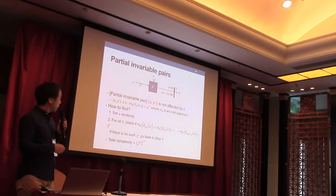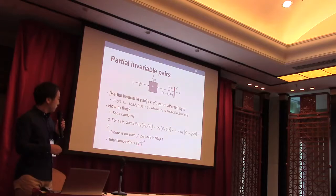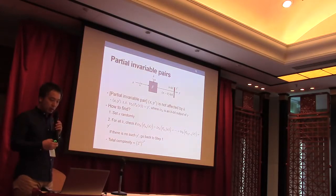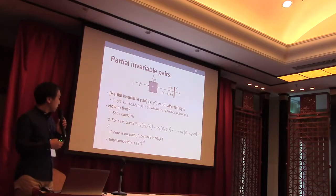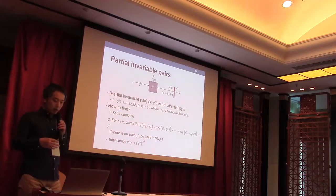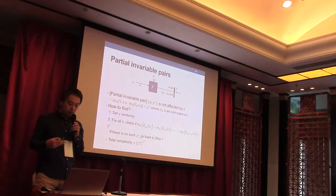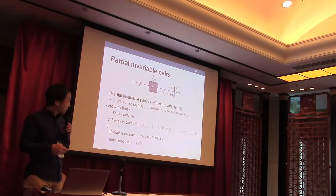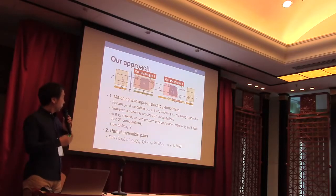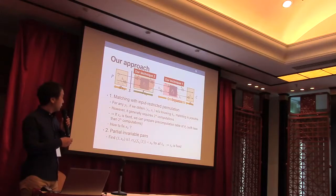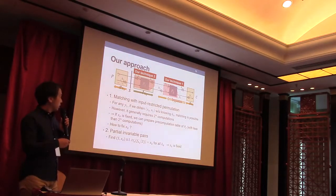We can find such partial invariable pairs by brute force search. It requires about 2 to the b to 2 to the a computations. It is clear that the required computation rapidly grows by the parameter a, so a must be small.